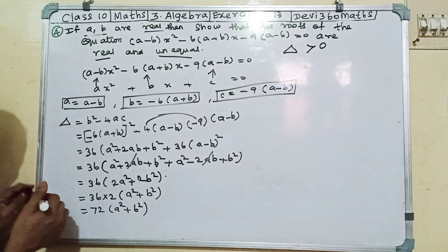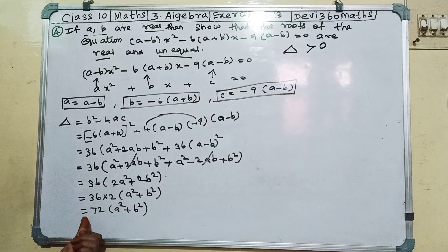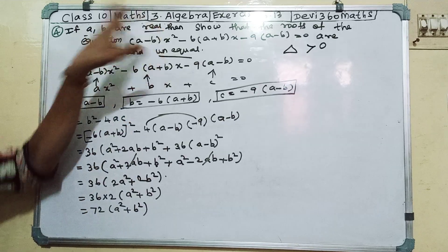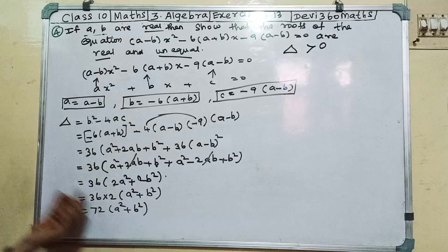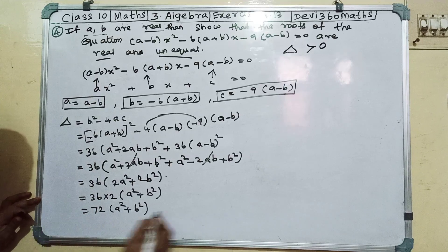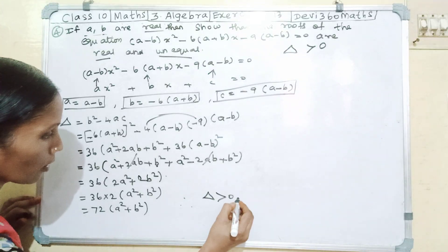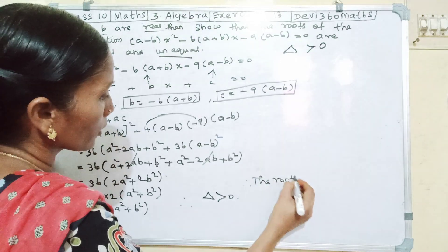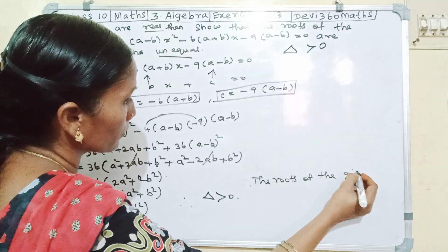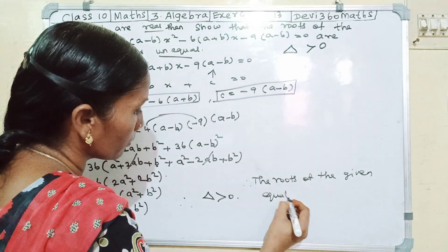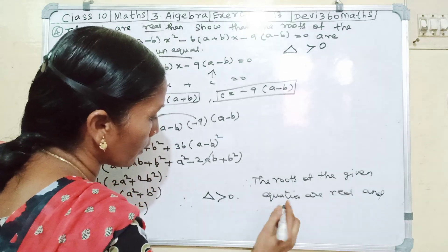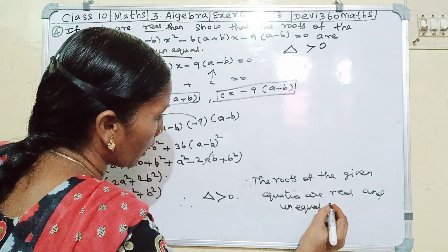Since a and b are real, the value of 72(a squared plus b squared) is always positive — it cannot be zero or negative. Therefore, delta is greater than 0, and hence the roots of the given equation are real and unequal. Hence proved.